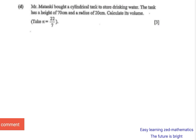The question was: Mr. Matanki bought a cylindrical tank to store drinking water. The tank has a height of 70 centimetres and a radius of 20 centimetres. Calculate its volume. Take pi equal to 22 over 7.